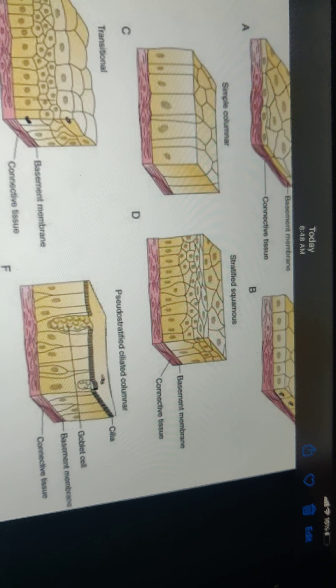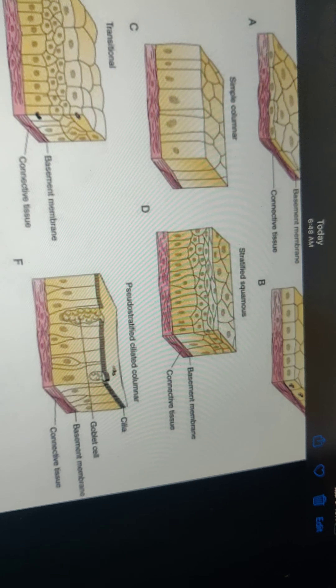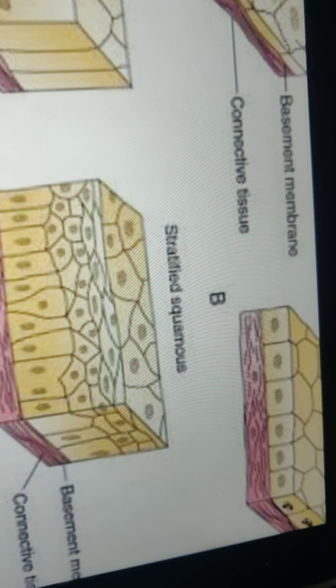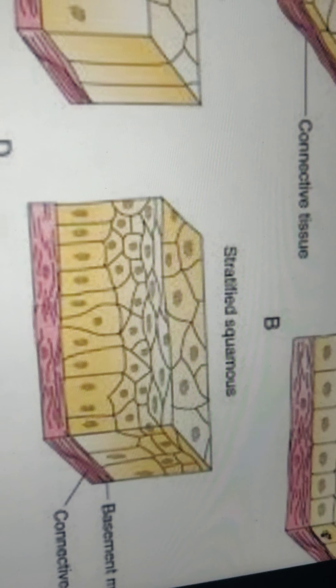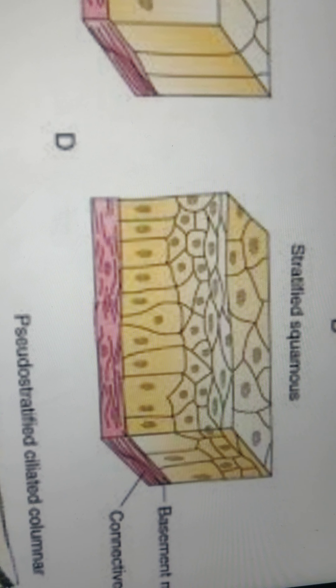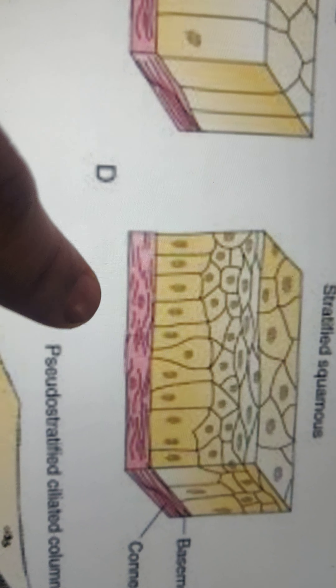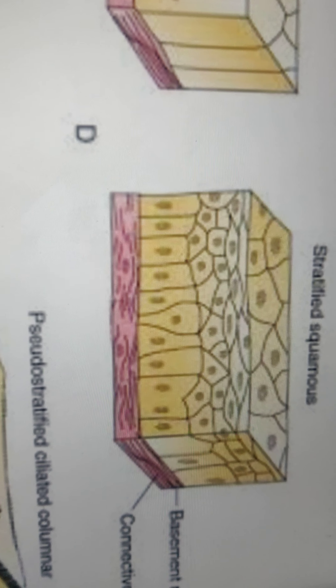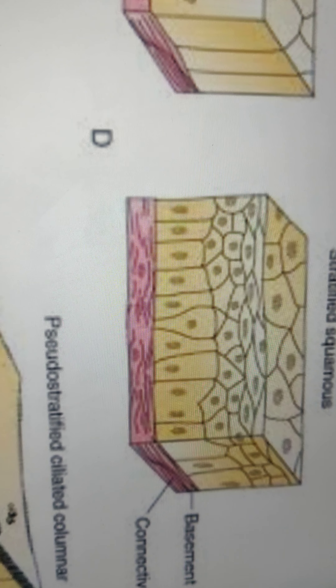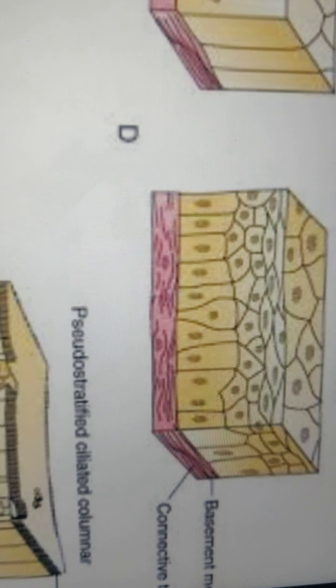Next we'll go over the stratified epithelium. In stratified epithelium, there are several layers of cells arranged one below the other. Generally, the basement membrane is absent, although diagrams may show it. The main function of stratified epithelium is to protect the underlying structures. These are of two types: stratified squamous epithelium and transitional epithelium.